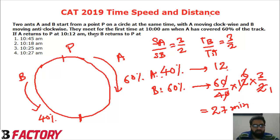So at what time B reaches P? 27 minutes after 10 am which is 10:27.